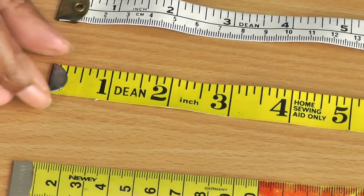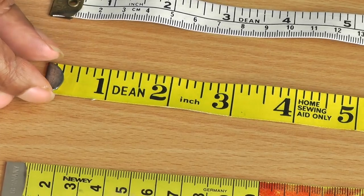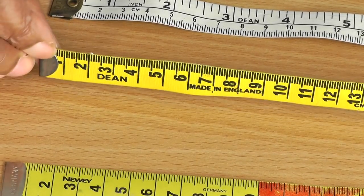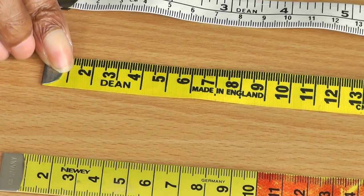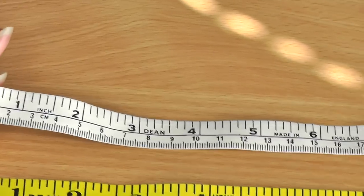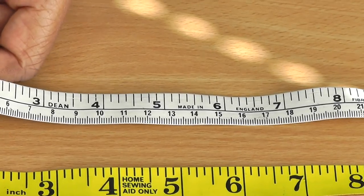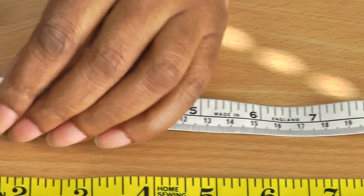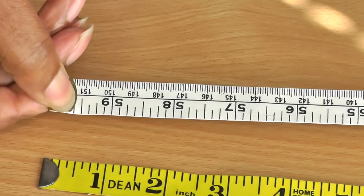The second one, as you can see, is inches and on the reverse side is centimeters. And the third is, as you can see, inches at the top and centimeters on the bottom, and if you turn it to the reverse side it is exactly the same.